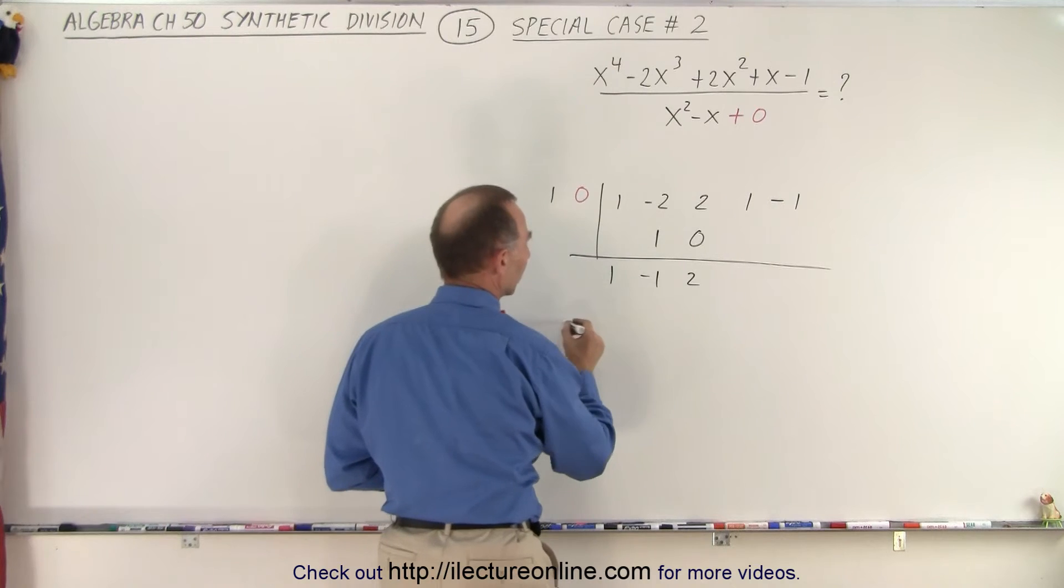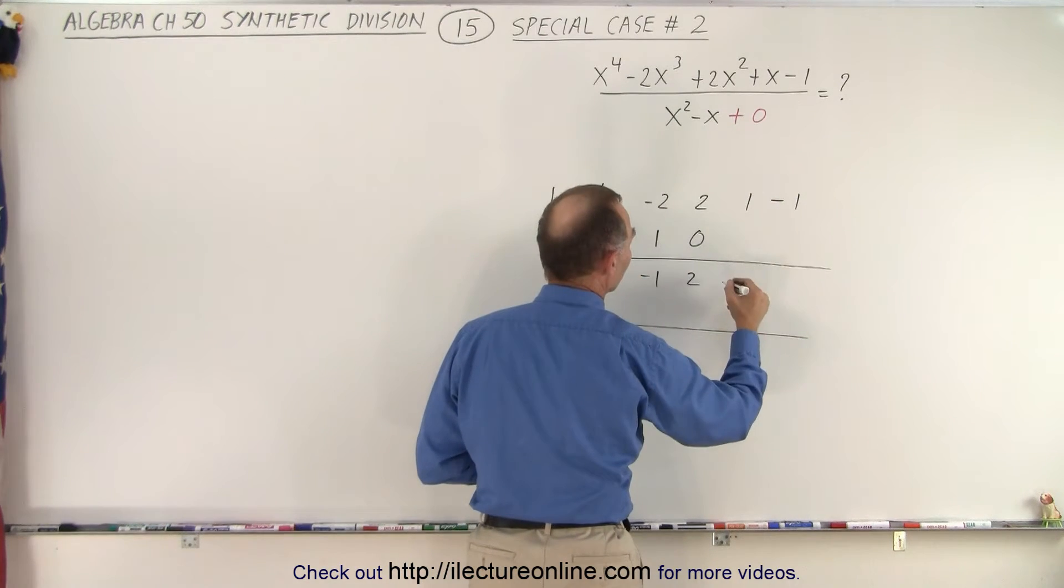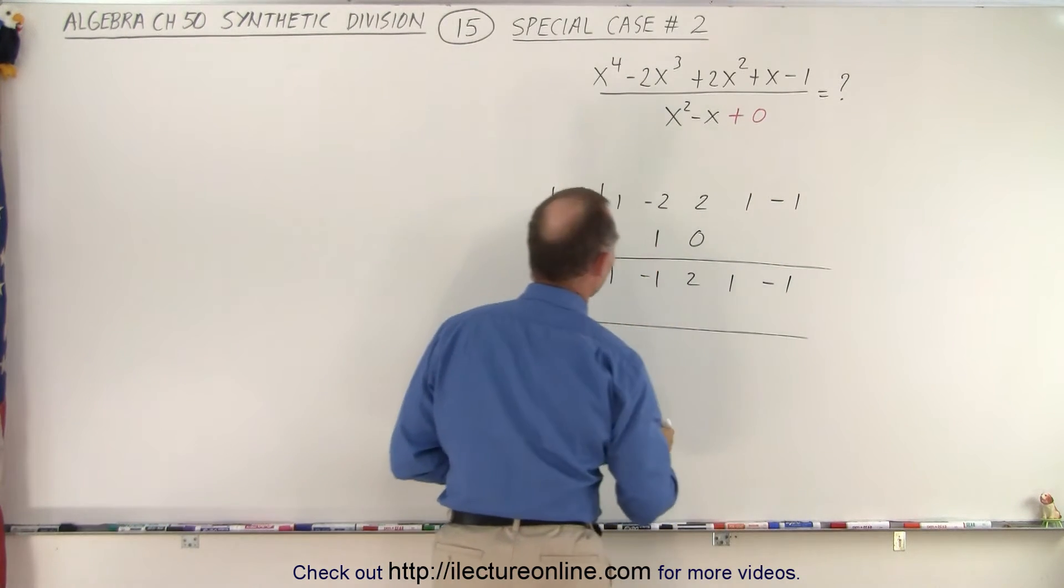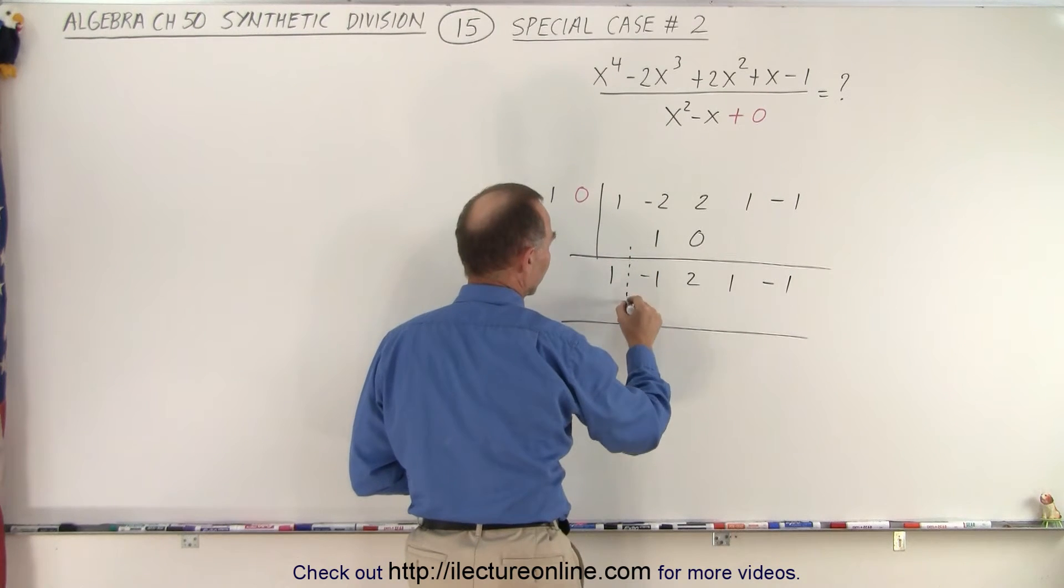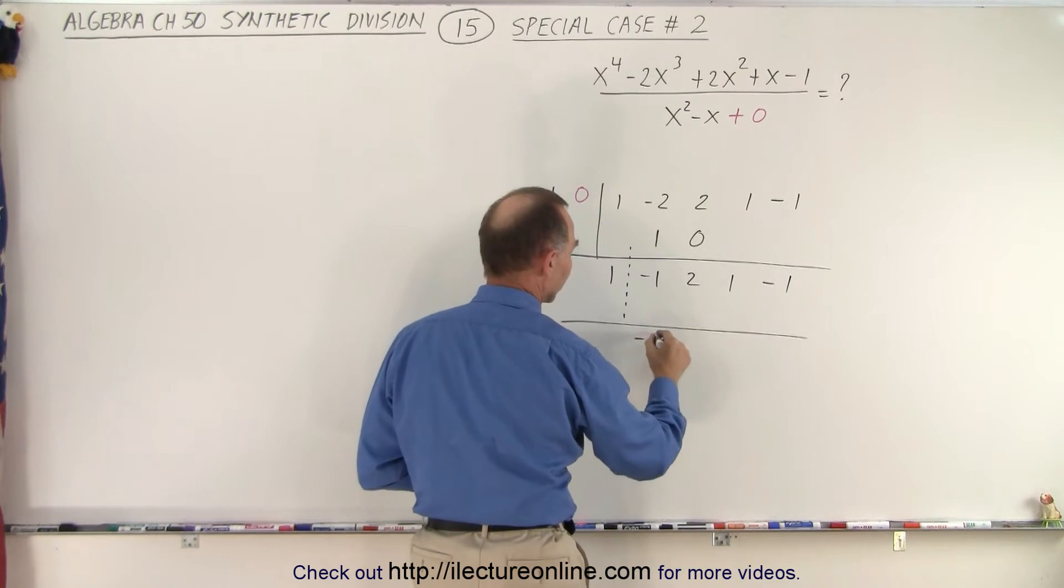Now what you do is you draw another line, you bring those two numbers down, 1 and negative 1, and cut it off over here. You bring the next number down, negative 1.